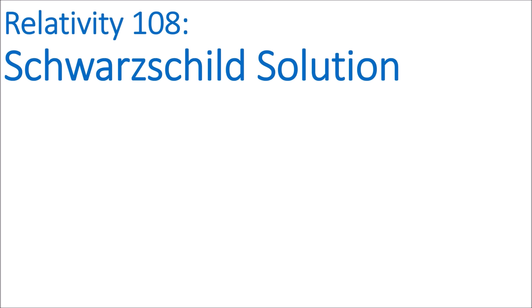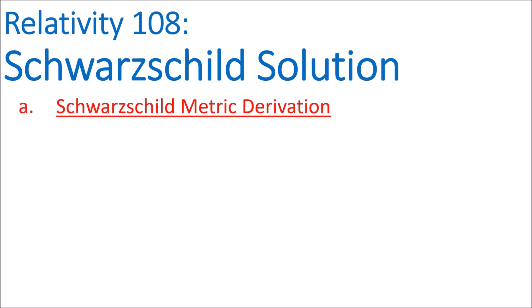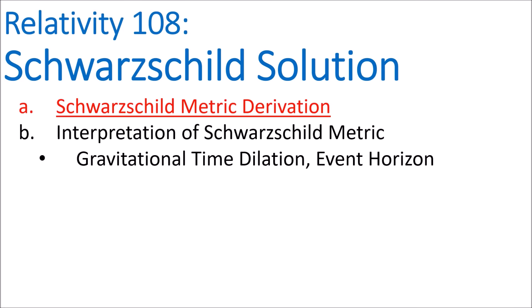In this video, 108a, we'll start by deriving the Schwarzschild metric from some starting assumptions. Then in 108b, we'll interpret what the metric means, explaining gravitational time dilation and also explaining a black hole's event horizon.